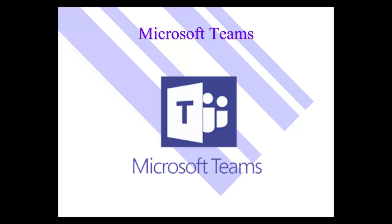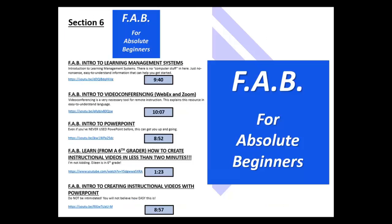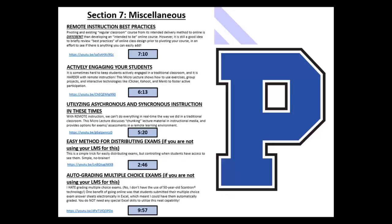Section 5 is Microsoft Teams, but no need to reinvent the wheel — Microsoft did such a great job that this section simply links over to Microsoft's own training for Teams. Section 6 is for absolute beginners who are really uncertain about the technology. It scales back to a very basic level: introduction to learning management systems, introduction to video conferencing, introduction to PowerPoint, and learn from a sixth grader how to create instructional videos in less than two minutes. Section 7 covers more miscellaneous pedagogy: remote instruction best practices, actively engaging your students, utilizing asynchronous and synchronous instruction, an easy method for distributing exams, and auto grading multiple choice exams — both for those not using their learning management system for these tasks.